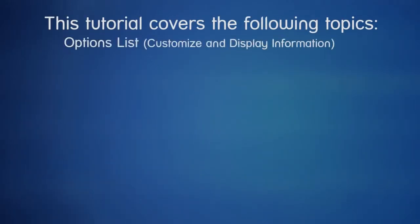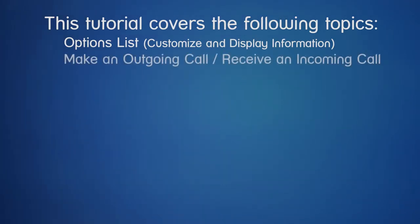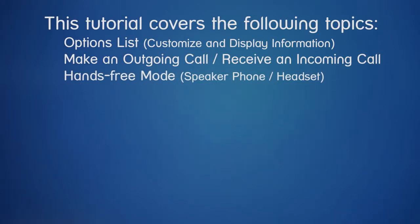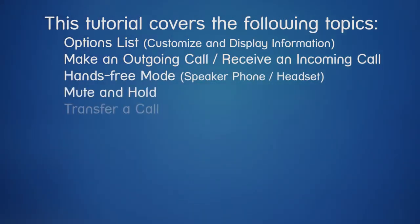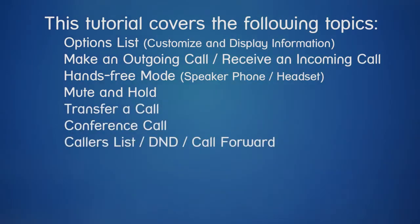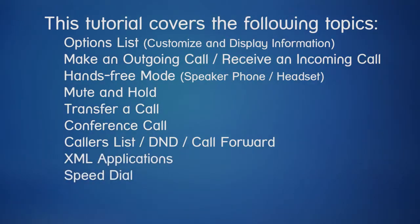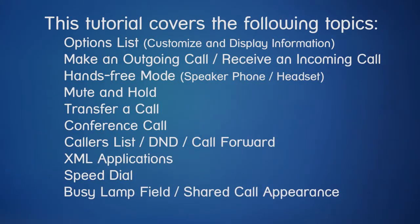In this tutorial, we'll open the options list and go through a series of menus where you can customize and display information about your phone. I'll demonstrate how to make and receive calls, and how to use the speakerphone and optional headset. I'll mute a call, place it on hold, transfer a call, set up a conference call, open the callers list, activate do not disturb, and set up call forward. I'll open an XML application, set up a speed dial number, look at busy lamp field and shared call appearance, and take a look at Astra's optional high angle stand.